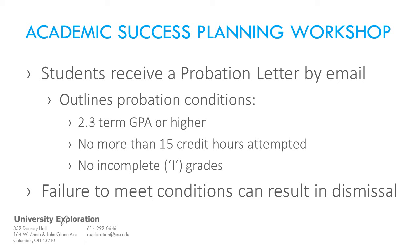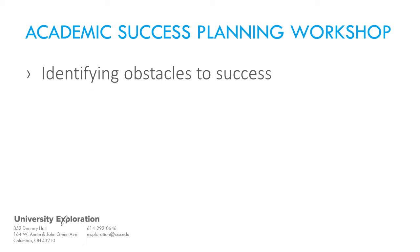Once you understand the terms of your probation, it's important to figure out how to fix it. We will start by reflecting on what went wrong, some ways to manage time more effectively, what resources OSU offers to help you succeed, and how to set goals. This will help you to overcome the obstacles you've been facing and raise your cumulative GPA above a 2.0 and get off probation. Now we will explore some potential obstacles that may interfere with academic success and result in being placed on academic probation.